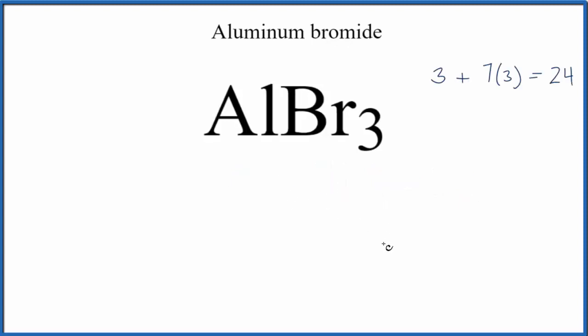We'll start by placing the least electronegative element in the center, that's Al, and then we'll put three bromine atoms around that central aluminum.